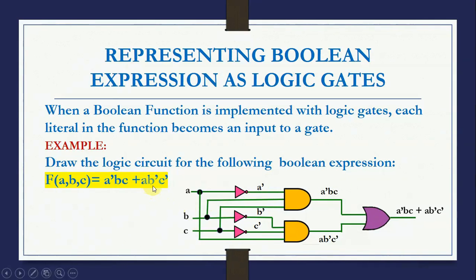For the next term AB̅C̅: we take A directly, apply a NOT gate to B to get B bar, and apply a NOT gate to C to get C bar. These three — A, B bar, and C bar — become inputs to a second AND gate, giving output AB̅C̅. Both terms A̅BC and AB̅C̅ are connected by a plus symbol, so we connect both AND gate outputs to an OR gate. The final output is A̅BC + AB̅C̅.